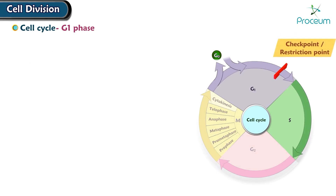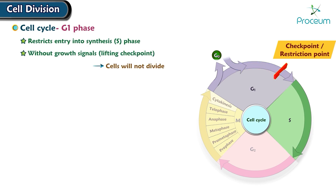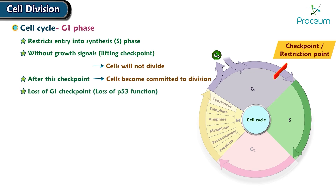The G1 checkpoint, or restriction checkpoint, is a cell division checkpoint that restricts entry into the synthesis (S) phase. Without growth signals that lift this checkpoint, cells will not divide. After this checkpoint, cells become committed to division. Loss of this checkpoint — for example, from loss of p53 function — leads to unregulated cell division.